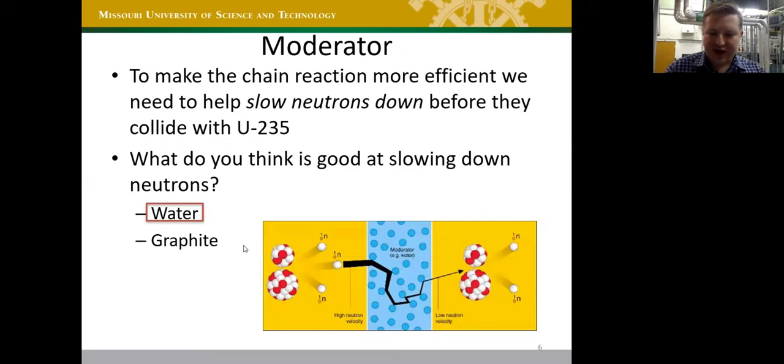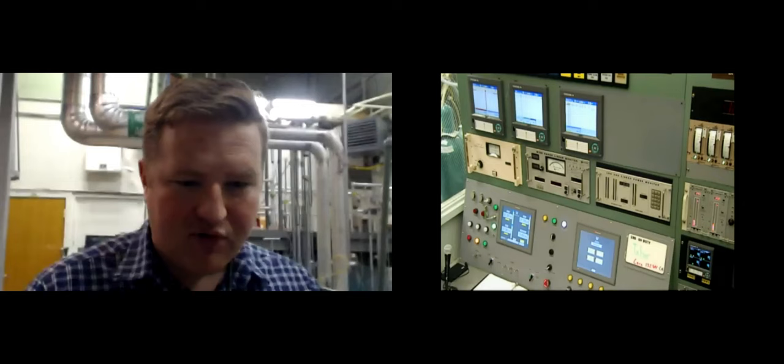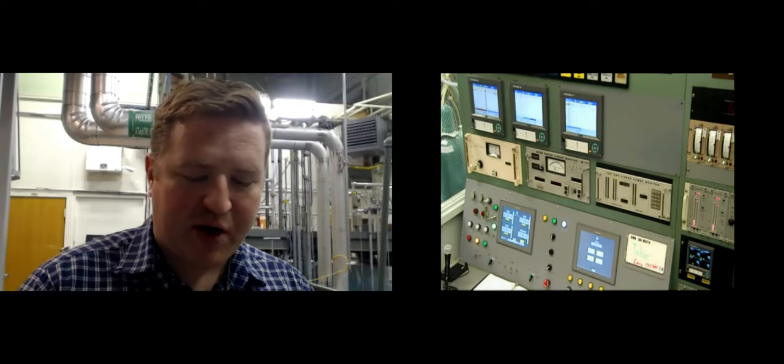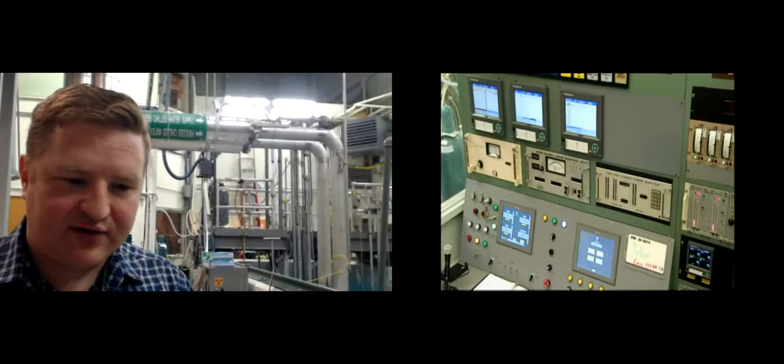What you see on screen now is a shot of the control room. When operating, a control room operator sits behind this desk using instruments and controls to change reactor power, start up, shut down, and perform different maneuvers. Part of being a reactor operator is understanding what all those instruments mean, knowing the reactor physics, and following the many procedures involved in operating safely.